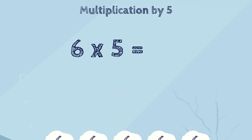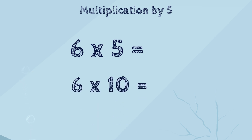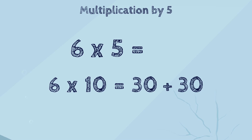Let's return to our example. The problem was: what is six times five? First, we'll multiply six times ten — that's sixty. Then we'll take half of sixty — that's thirty. So six times five is thirty.